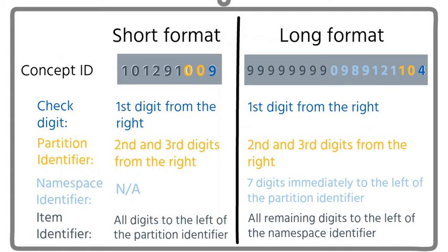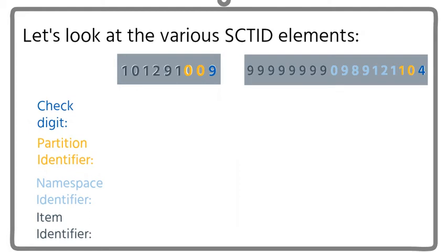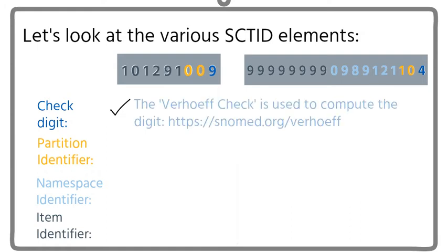So what can each of the various ID elements tell us about the ID? Let's take a look. The check digit is computed from the other digits in the ID and can be used to check if the SNOMED ID is valid. The Verhoeff check is used to compute the digit.